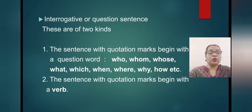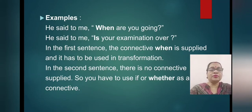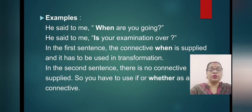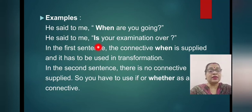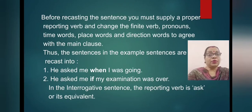The second type is when the sentence with quotation marks begins with a verb. In the first type, a question word like 'when' is supplied and used as the connective in the transformation. In the second type, there is no connective supplied, so you have to use 'if' or 'whether' as a connector.